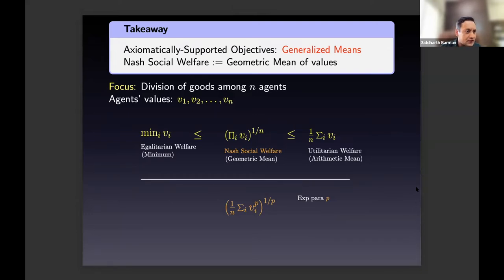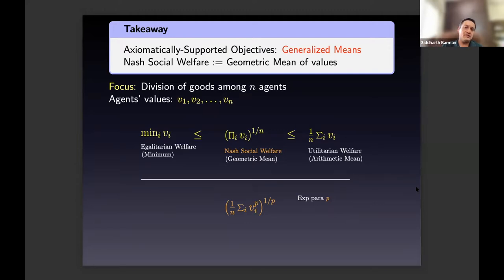There's a chat question: what do you mean by symmetry here? Symmetry means that if two divisions have the same collection of valuations just permuted across agents, the welfare value stays the same.